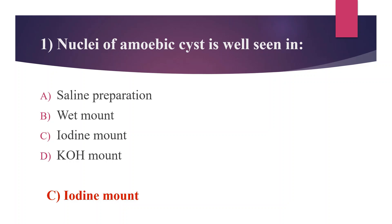In iodine wet mount, the pale refractile nuclei stain brown in color. Iodine wet mount preparation is used for the detection of protozoans, helminths, and larvae. D'Antoni's iodine and Lugol's iodine are recommended for use. Iodine wet mount differentiates parasitic cysts from host WBCs. Many protozoa and cysts take up the dye and appear brown, while other objects in the sample remain clear.